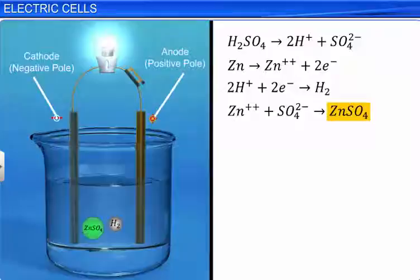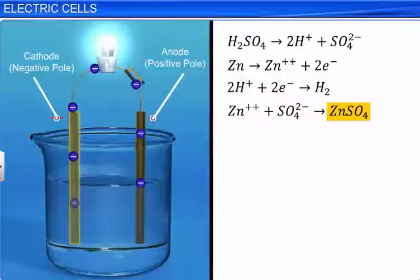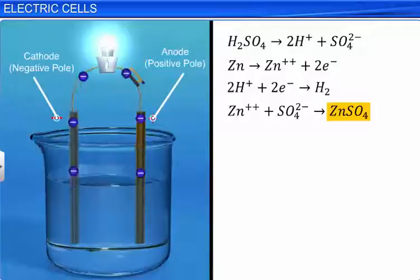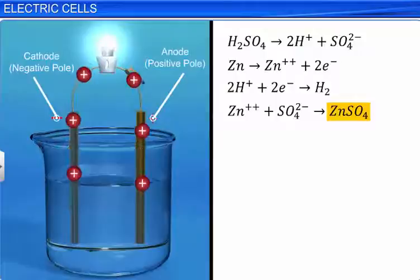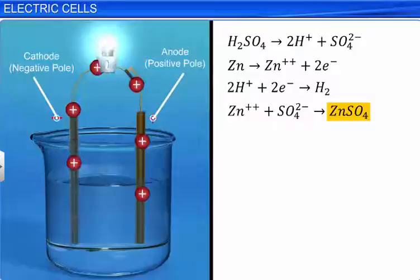Outside the cell, electrons flow from the zinc rod to the copper rod — from the negative pole to the positive pole. We consider conventional electric current to be the flow of positive charges, which is opposite to the direction of the flow of electrons. Thus, outside the cell, current passes from the positive pole to the negative pole. There are two defects in a voltaic cell: local action and polarization.